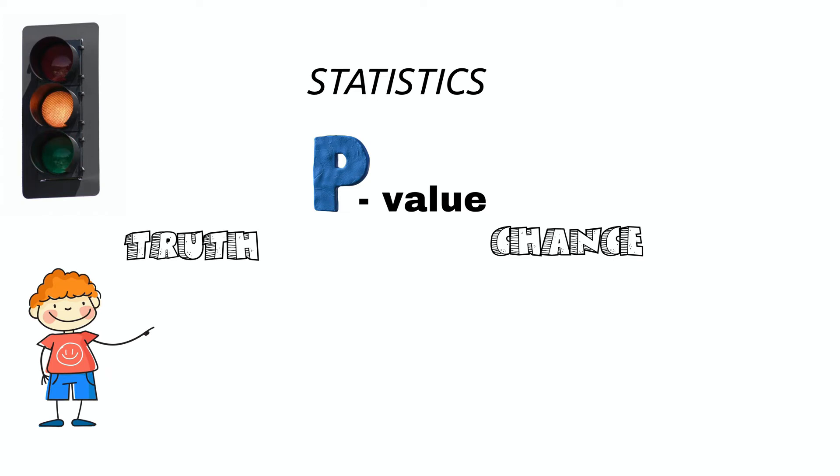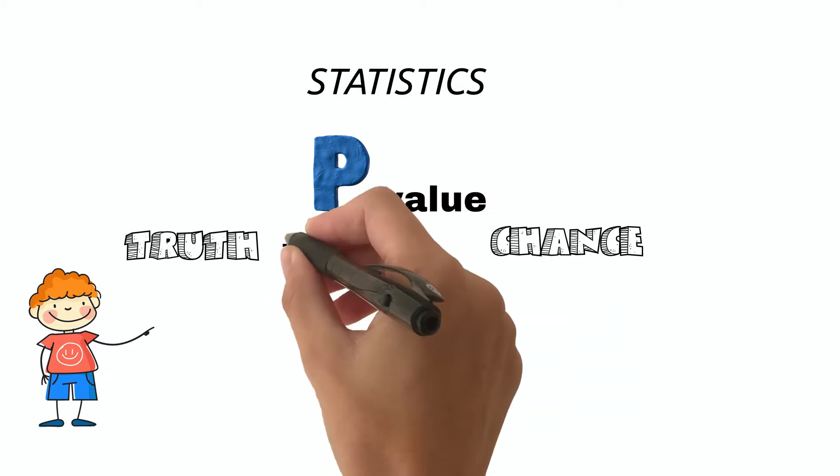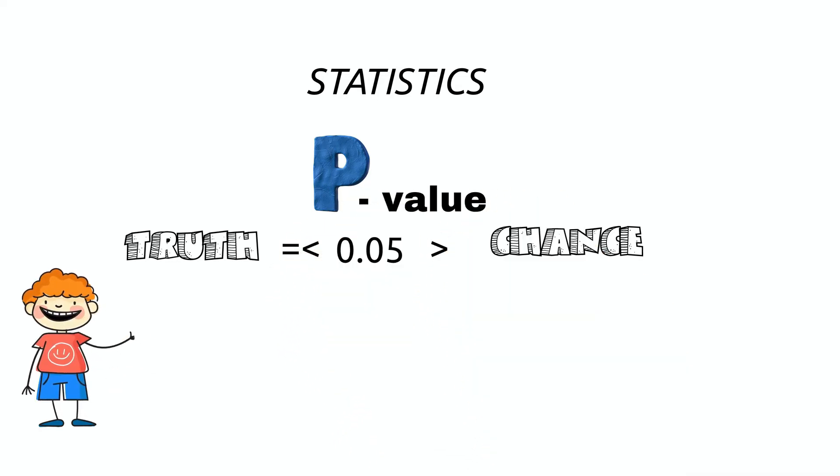Lower the p-value, more likely your findings are true and not just happening due to random error or chance. To indicate statistically significant results, epidemiologists consider a p-value of 0.05 or lower. In other words, we can say that there is less than 5% chance that the results are due to chance.